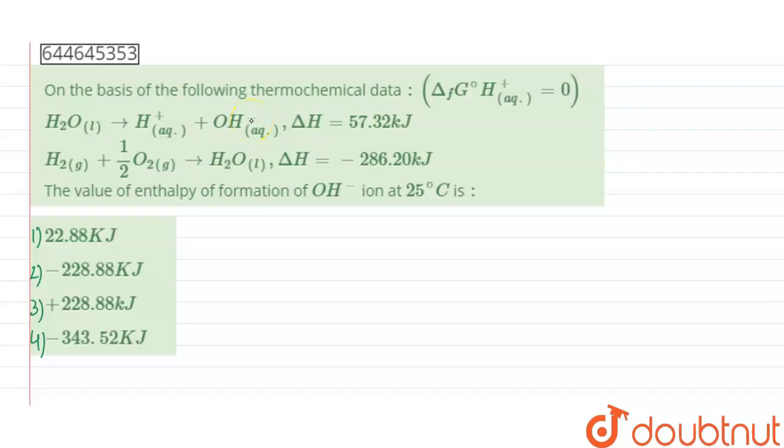So hello guys. The given question says, on the basis of the following thermochemical data, here two reactions and their enthalpy of reaction are given, and we have to find the value of enthalpy of formation of OH minus ion at 25 degrees Celsius.